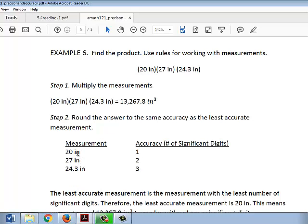Remember, accuracy was the number of significant digits. Twenty inches has one significant digit, so its accuracy is one. Twenty-seven has two significant digits, so its accuracy is two. Twenty-four point three inches has three significant digits, so its accuracy is three.